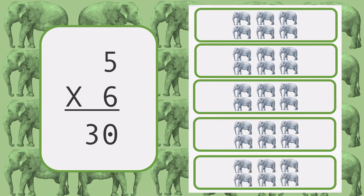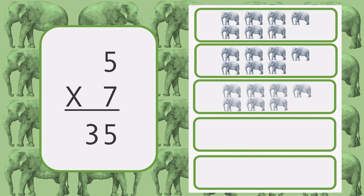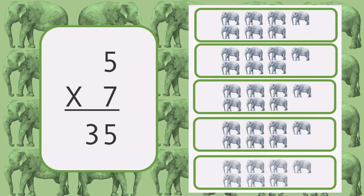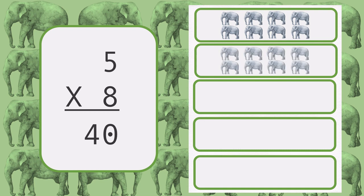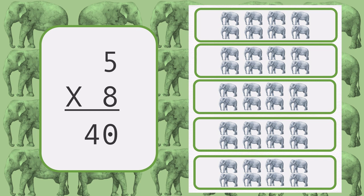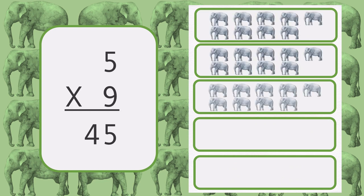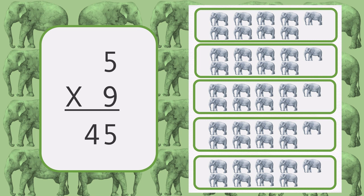There are 5 groups of 6. 5 times 6 is equal to 30. There are 5 groups of 7. 5 times 7 is equal to 35. There are 5 groups of 8. 5 times 8 is equal to 40. There are 5 groups of 9. 5 times 9 is equal to 45.